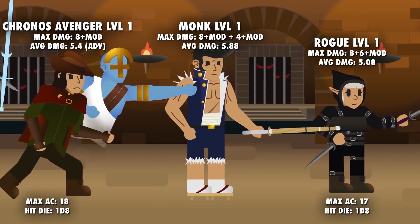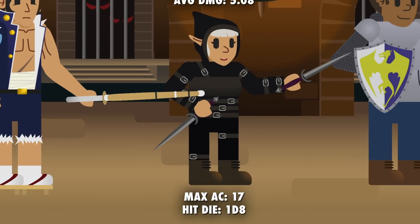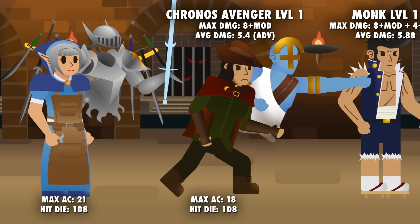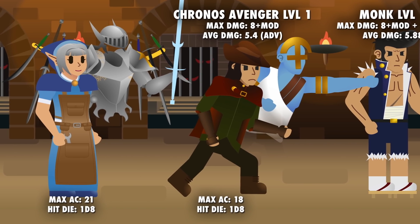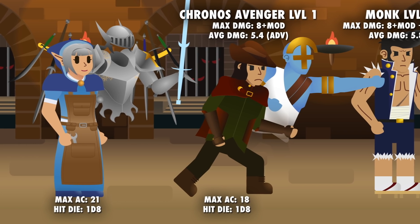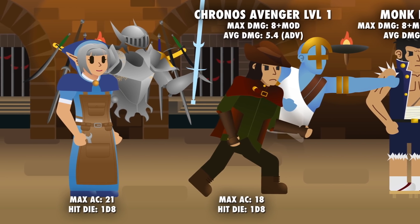In terms of survivability, it is a bit more complex, and you shouldn't just look at hit points and AC. Rogues, for example, may have okay AC and a relatively small 1d8 hit die, but they have damage-reducing features like uncanny dodge and evasion. The Chronos Avenger subclass may not have as much AC as the Iron Myrmidon, but the fact that the subclass can hit most enemies from outside their opportunity attack range increases its survivability.